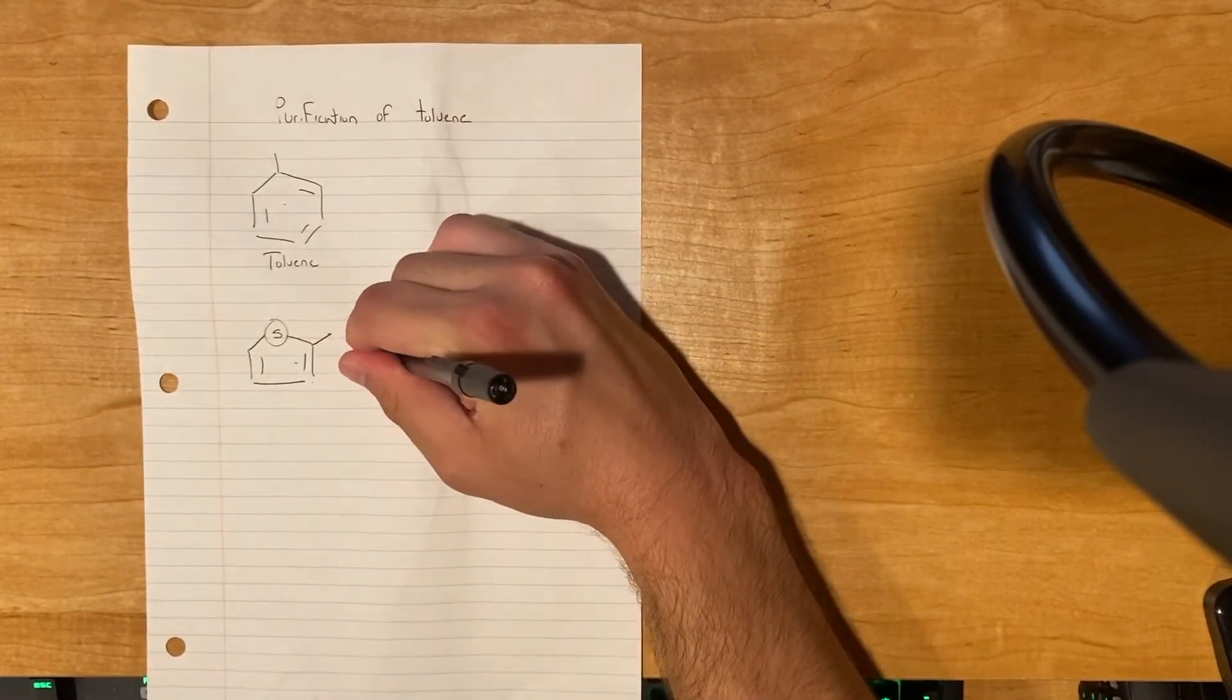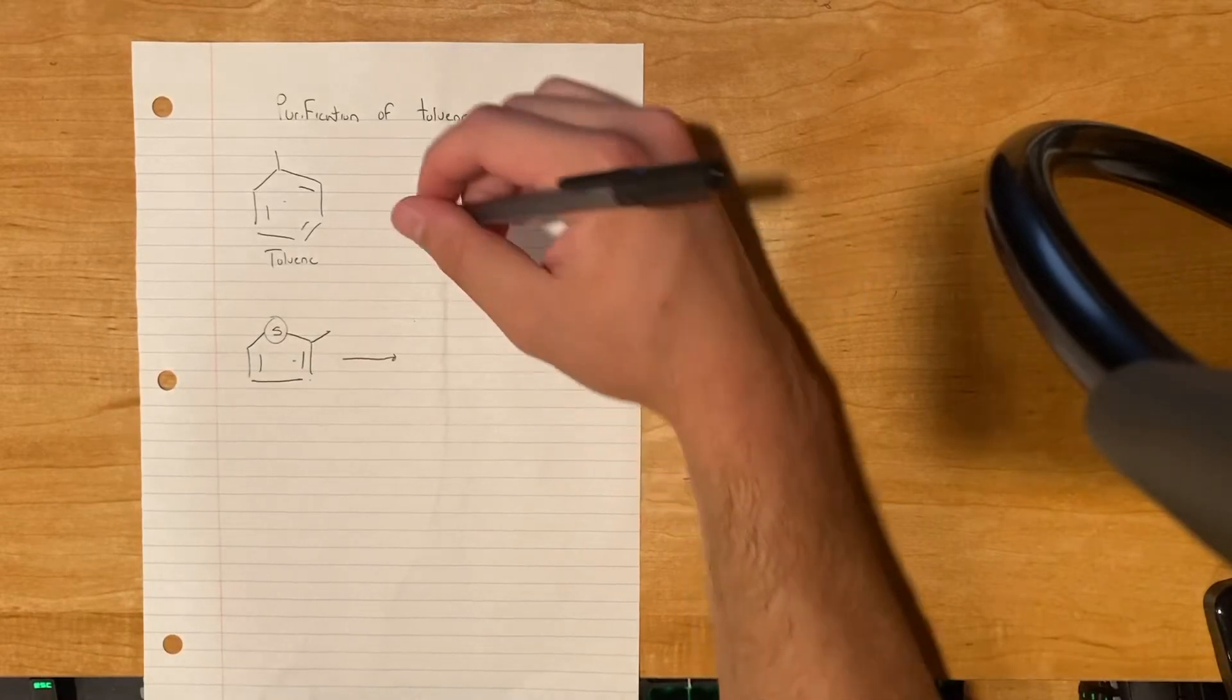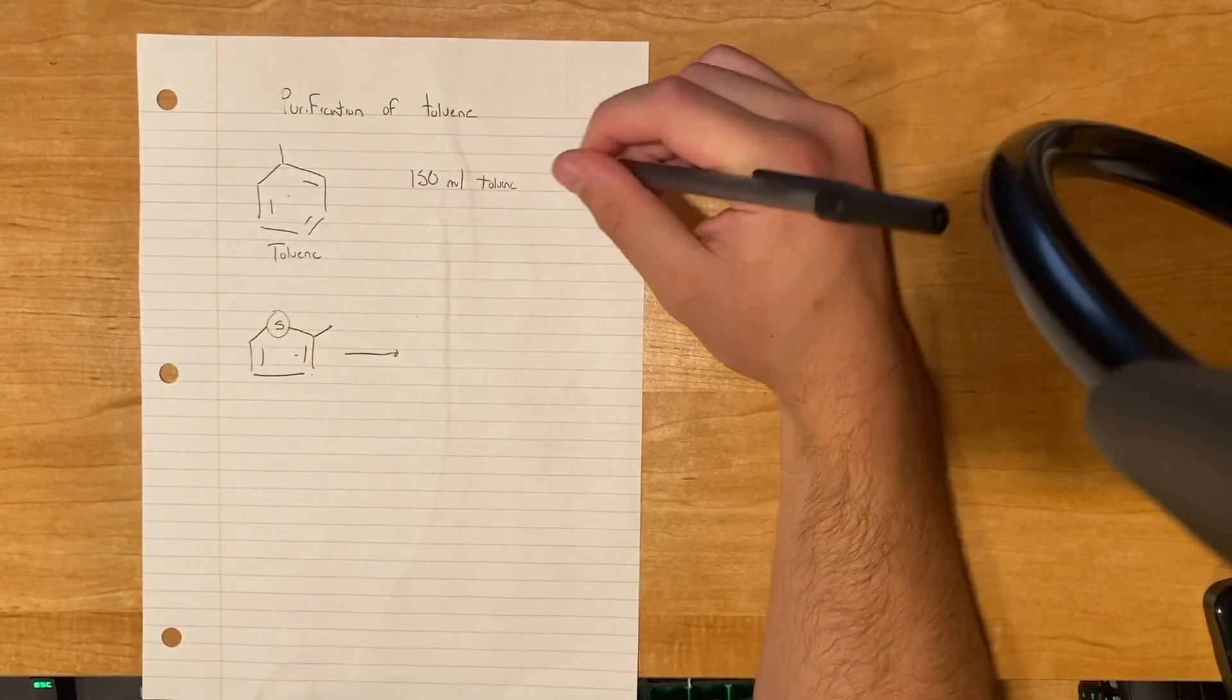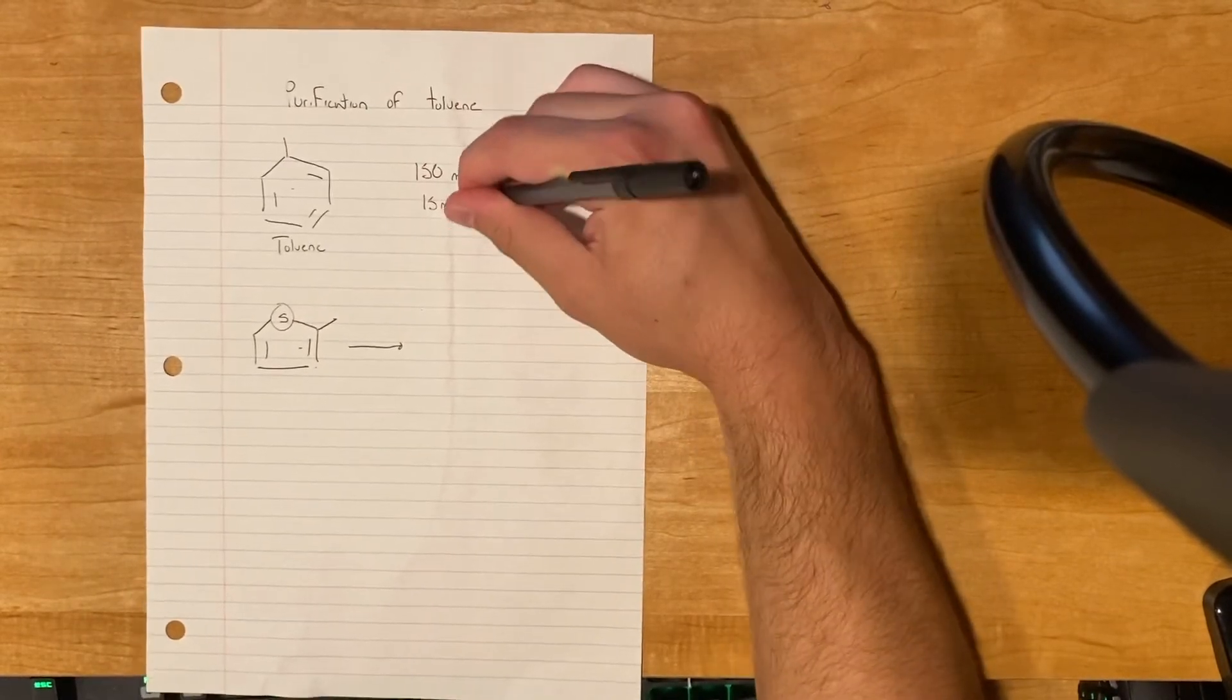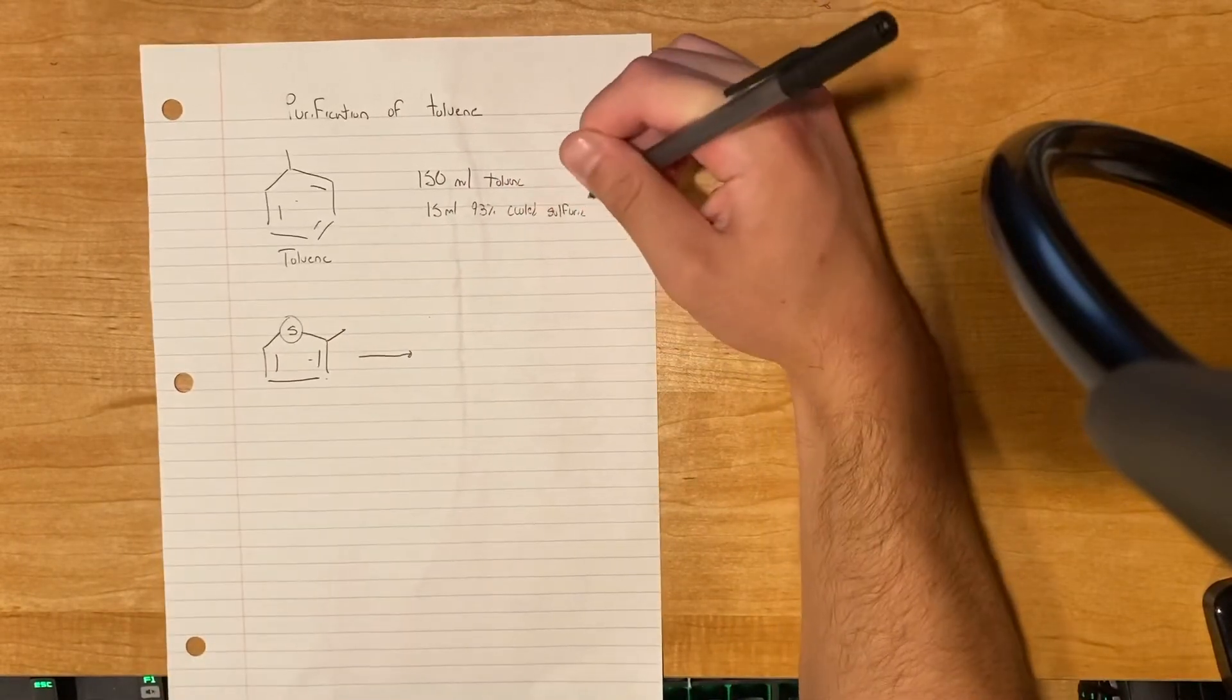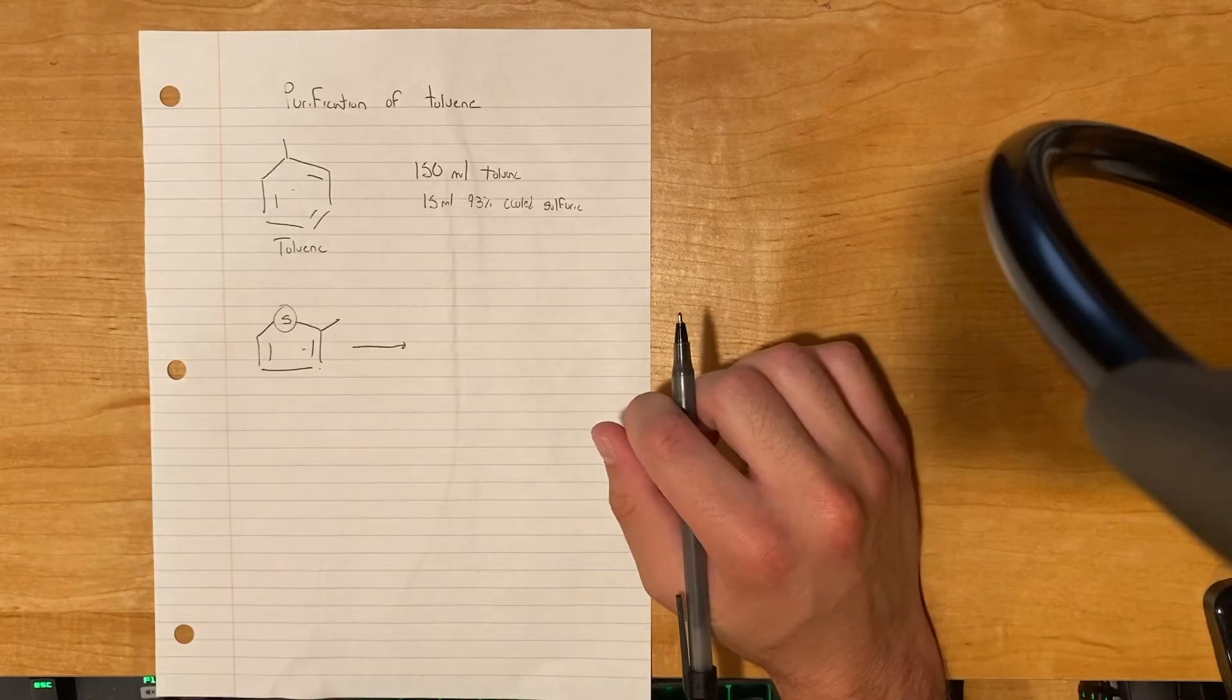So to do this, we add a 10% by volume solution of cooled 93% sulfuric acid. So let's say we have 150 milliliters of toluene that we want to purify. That means we have to use 15 milliliters of 93% cooled sulfuric acid. It has to be cooled or it might cause the toluene to boil and release toluene vapors into the room, which would not be good.